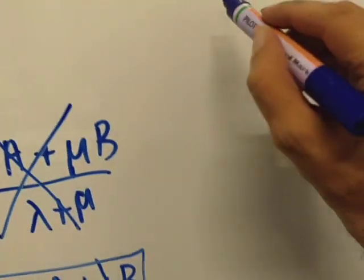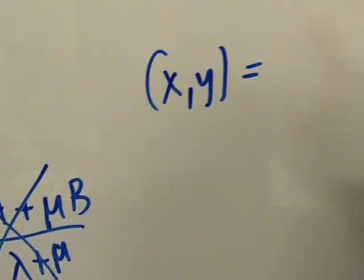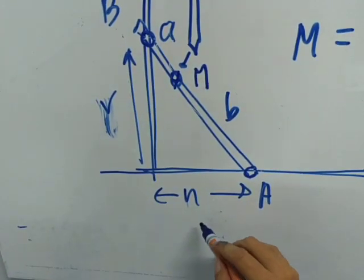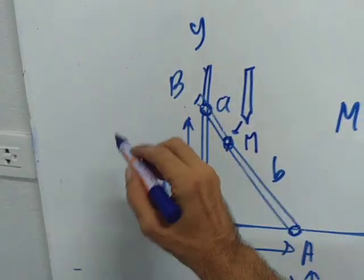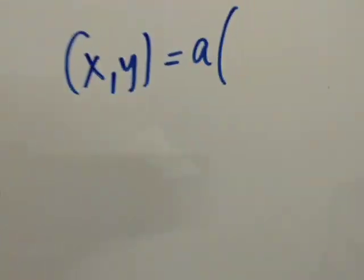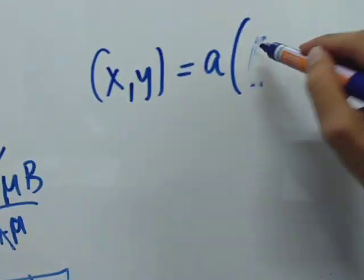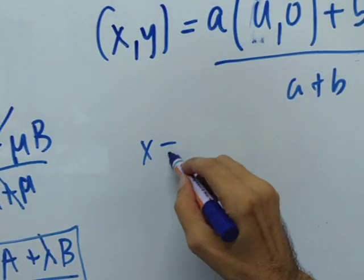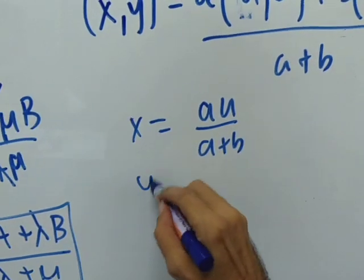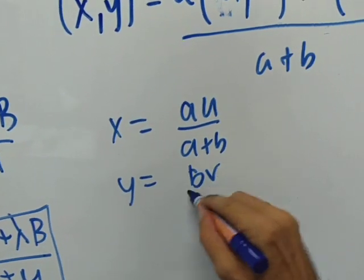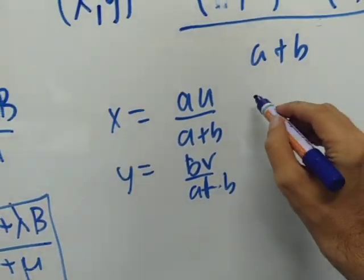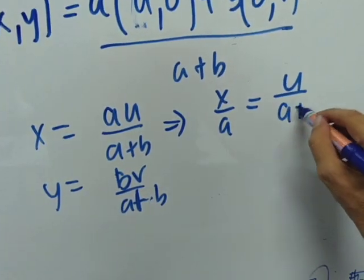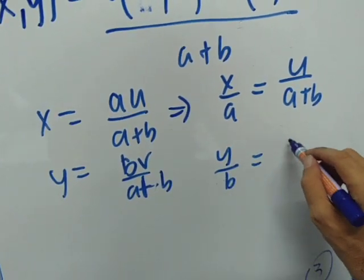So M is x, y, and that's equal to A times A. What is A? Point A is U, 0 here. And what's point B? It's 0, V. A times U, 0 plus B times 0, V over A plus B. So we have x is equal to AU over A plus B, and y is equal to BV over A plus B. Now, let's divide both sides by A. We get x over A is U over A plus B, and y over B is V over A plus B.